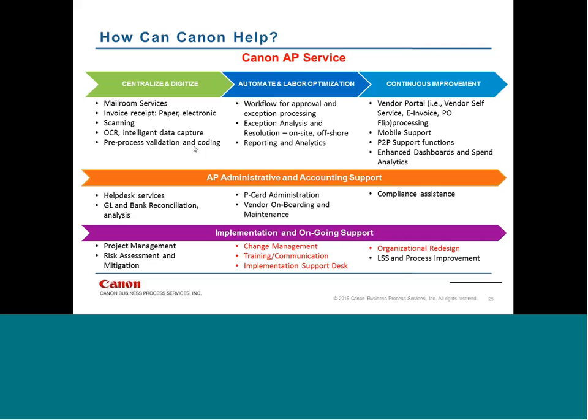I want to take a few minutes to highlight Canon's ability to facilitate change. We provide an end-to-end solution across centralize, digitize, automate, labor optimization, and continuous improvement phases. We also provide administrative and accounting support like help desk services, GL bank reconciliation, and P-card admin. When Canon defines an end-to-end process, we don't stop with AP — end-to-end goes into implementation and ongoing support. If you think back to the cartoon, Canon can be the bridge that answers the question of how. Our staff have expertise in AP best practices, project management, and Lean Six Sigma, and we have a passion for ensuring your organization continues to improve. We can provide a change strategy and plan to help guide you through that transition.